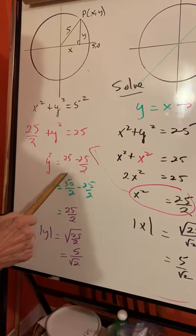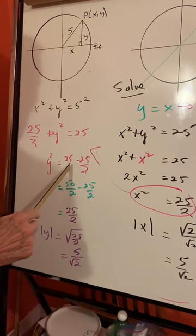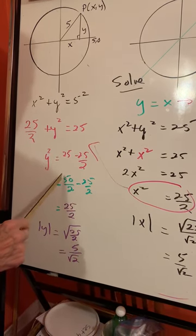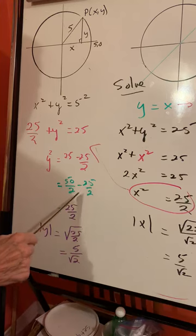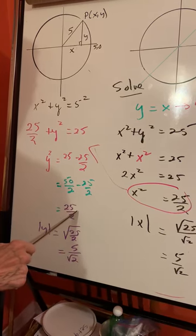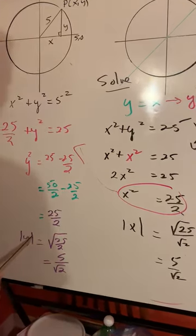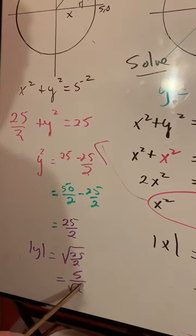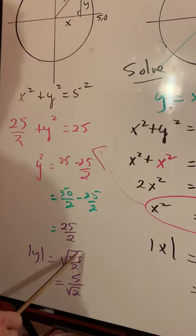The sign changes. I need a common denominator. Make it 2 times 2. Makes it 50 over 2. 50 minus 25 is 25 over 2. Therefore the length of y will be the square root of 25 over the square root of 2, which is 5 over the square root of 2.